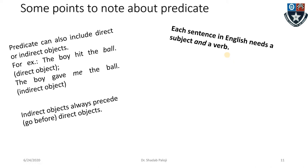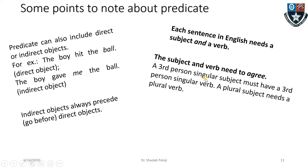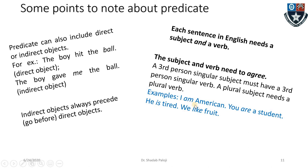Each sentence in English needs a subject and a verb — any complete sentence must have both. The subject and verb need to agree with each other. If a third person singular subject is used, it must have a third person singular verb; a plural subject needs a plural verb. For example: 'I am American,' 'You are a student,' 'He is tired,' 'We like fruit' — singular subjects with singular verbs, plural with plural.